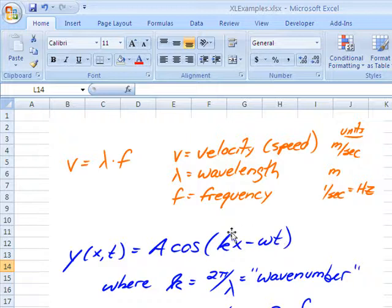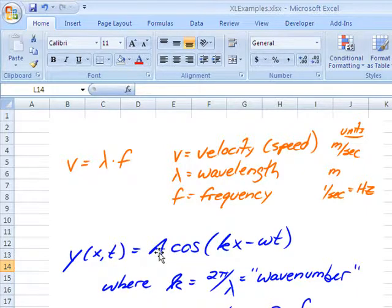The A is the amplitude. The cosine function just goes from minus one to plus one. That's the range of its values. So if you want your wave to be taller than an amplitude of one, then you multiply it by A, and then your function will go from minus A to plus A.